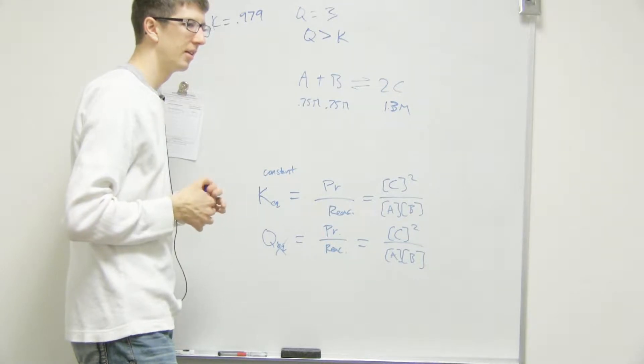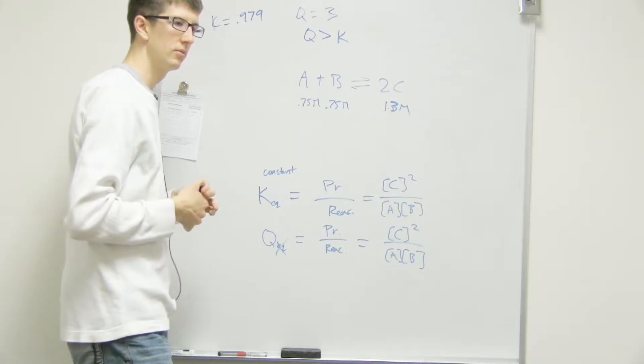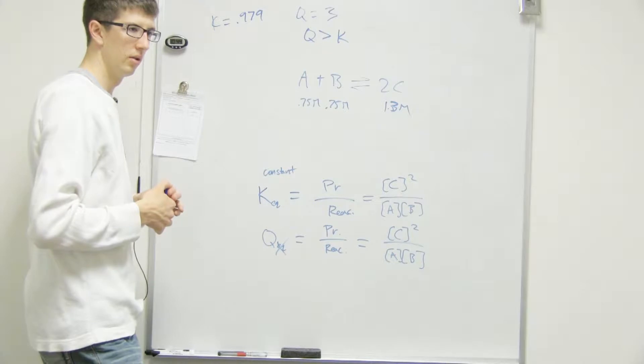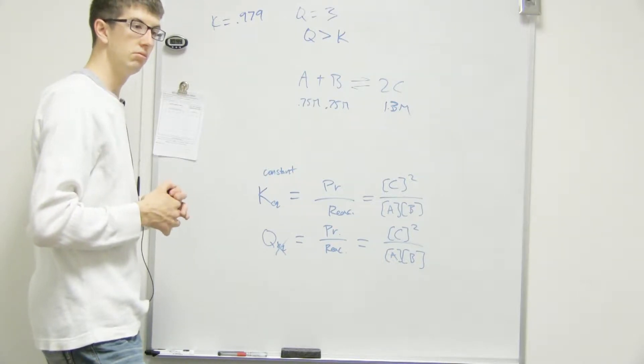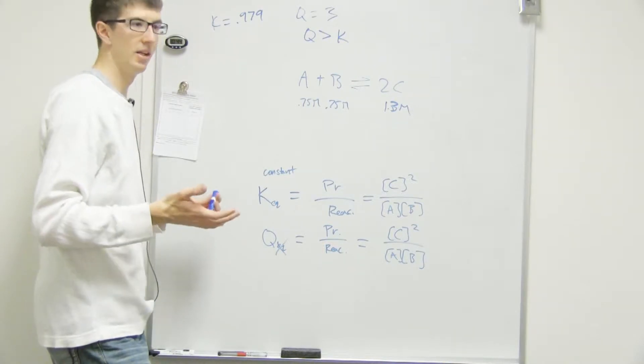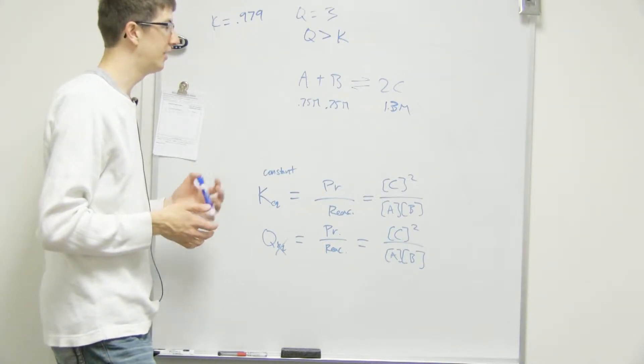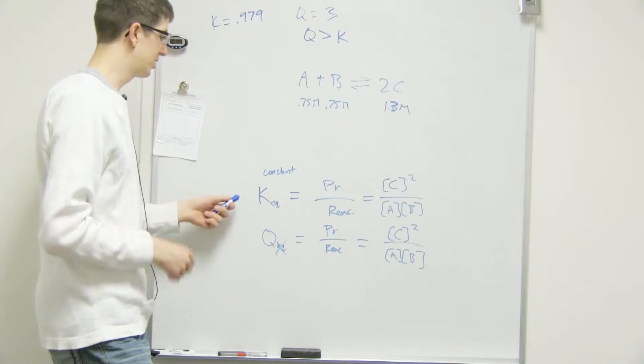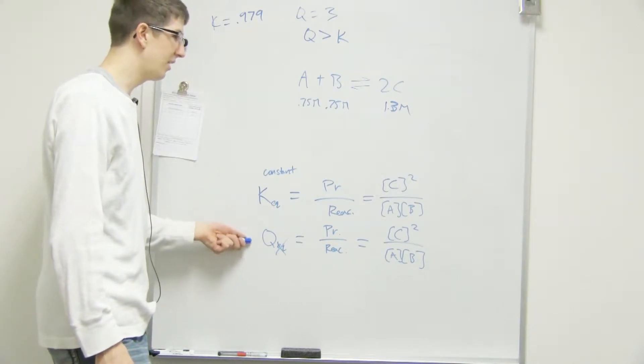Q is not equilibrium, you just use it to figure out which direction things are going. Now, it seems simple, which it really is. It's really not that complicated, the difference between Q and K. It's just simply knowing that Q is not at equilibrium.